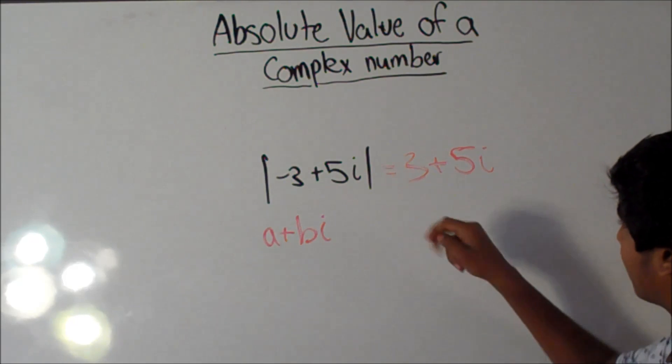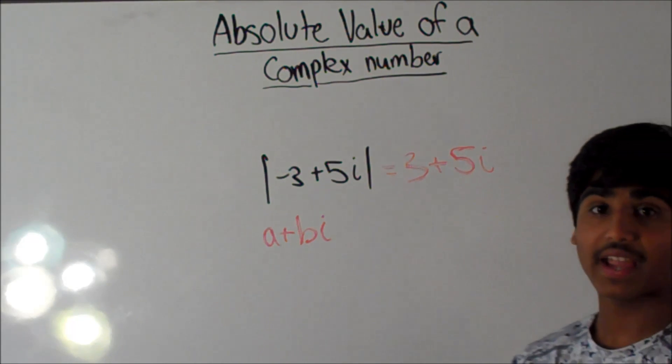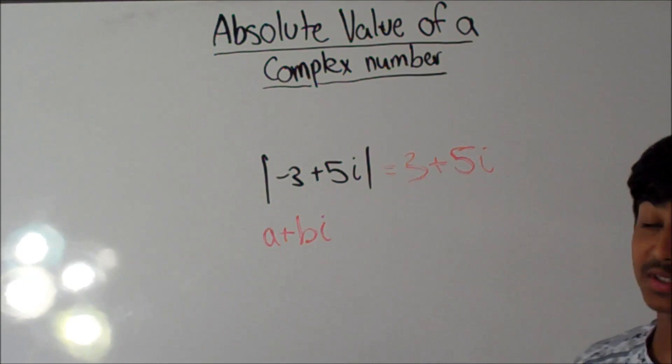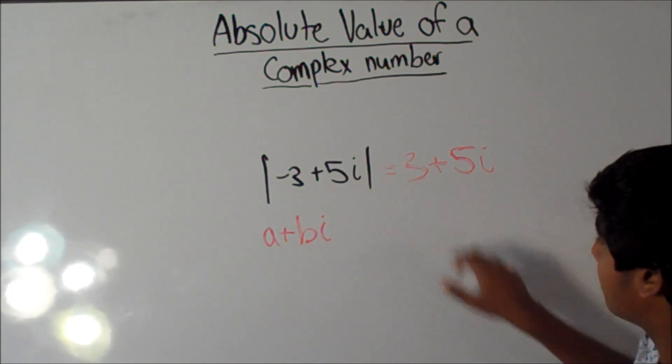Now, what does that mean? Well, we use the Pythagorean theorem to do this. So, we do a squared plus b squared equals c squared, where this is a and b.